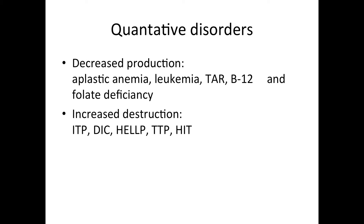Quantitative disorders are defined as when there is a platelet amount less than 100,000 per microliter. But bleeding will begin when it's around 20,000 to 30,000. There are two major categories: decreased production or increased destruction.